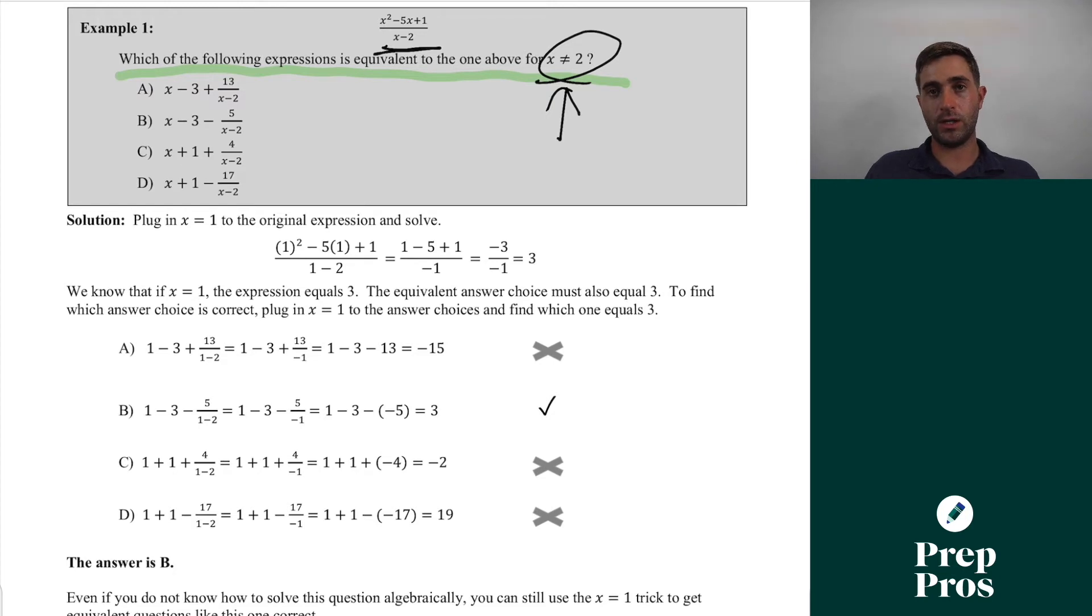But all we have to think about here is we simply cannot plug two in. The reason you get this statement is because you're creating undefined values. But if you're going to do this pretty much just the technical way, you don't really have to worry about this. If we're dealing with extraneous solutions, which we'll cover later, this is something we have to consider a little bit more. But all I would do here is simply plug one in for each of my x values, as you can see. So my x squared becomes one squared, minus 5x becomes minus five times one, and x minus two becomes one minus two.